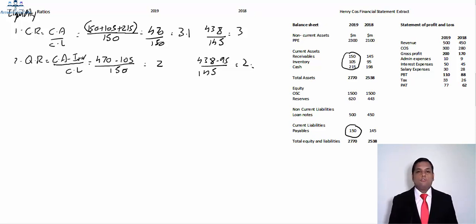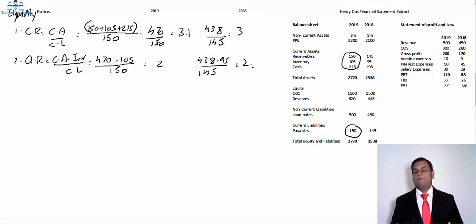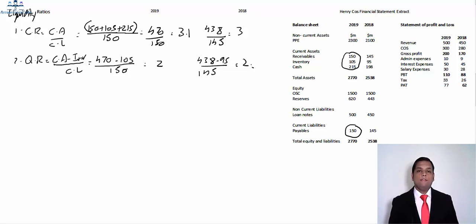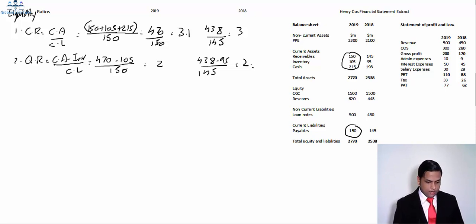The company is capable of settling its current liabilities and does not need to concentrate intensely in this area. The quick ratio shows a significant figure of 2 — well above the minimum of 0.5. This means the company has enough liquid assets to set off its current liabilities comfortably.